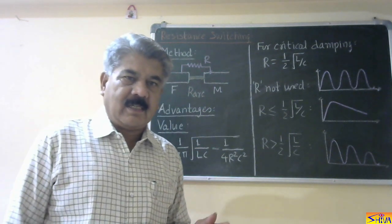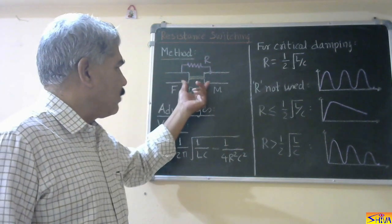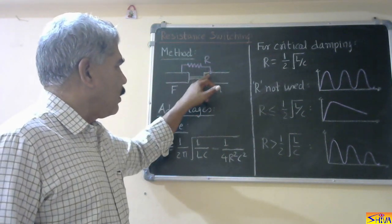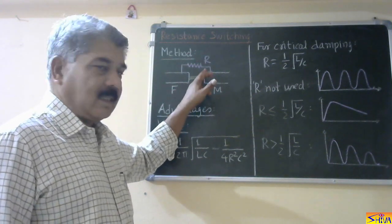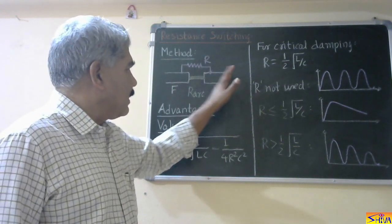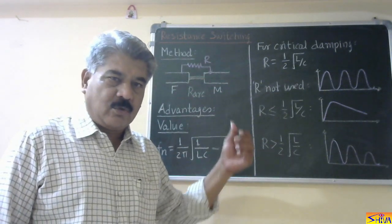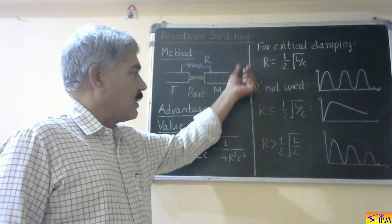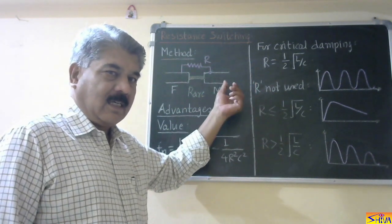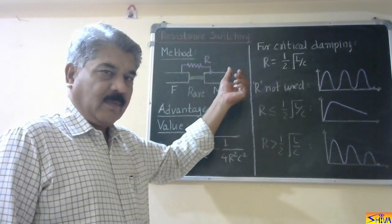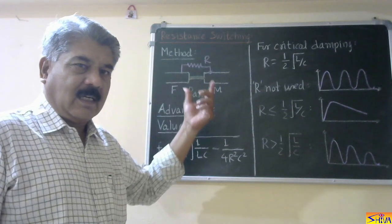How do we remove this resistance after arc interruption? There are two methods. The first, shown here, uses the moving contact — by movement of this moving contact, this resistance can be disconnected. The second method uses an external switch, like an isolator. When arc is interrupted, we open that switch and this resistance along with the circuit breaker is disconnected from the system.